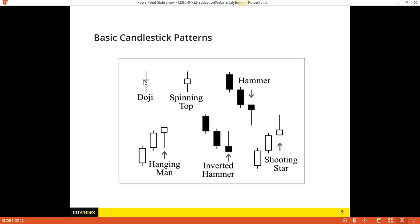What is a doji? We have a candlestick which opened and closed at the same price or very, very near the same price. It went up and went down, and then it closed near or at where it opened. What does that talk about? That talks about indecision in the market. The story this doji is telling you: at this point we had a lot of struggle between the bulls and the bears, up and down. And in the end we reached equilibrium, about where it opened. That signifies indecision in the market and therefore a possible turn in the market.